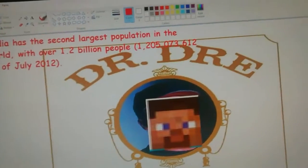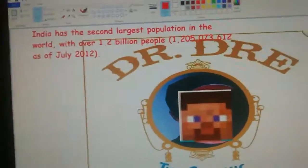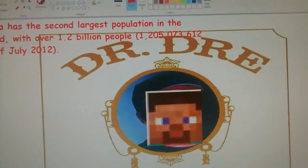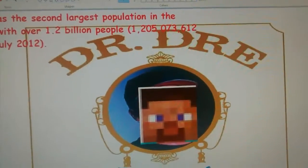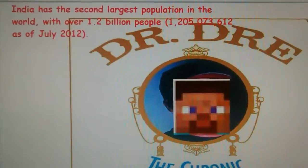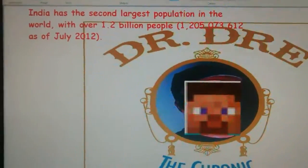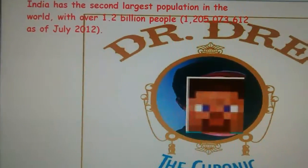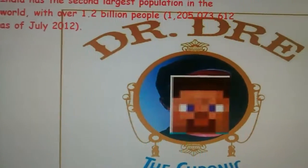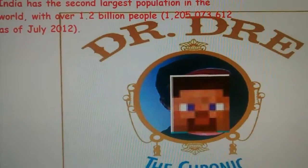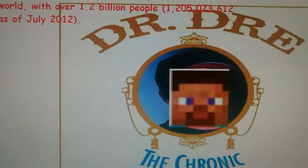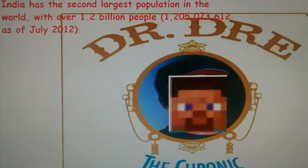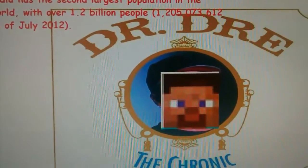If you want to be cool and graduate from school, then you got to be able to remember your multiplication tables. Let's start with 1, 2, 3, and then the 4, 5, and 6, and 7 and 8. Multiplying by 1 is just the number that it already was, and you don't have to change anything.